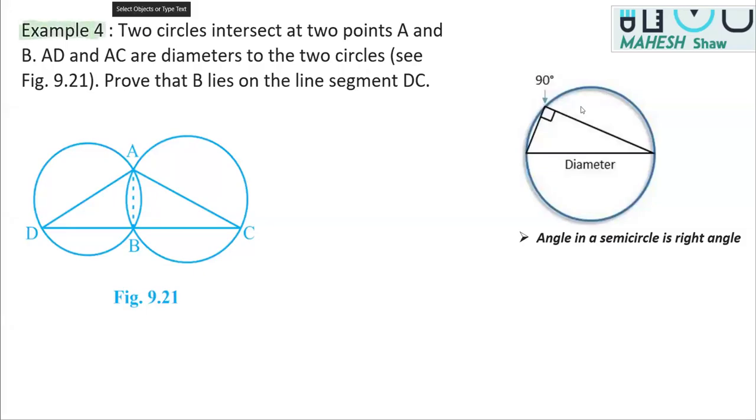This is example number four from the chapter circle. The question says that two circles intersect at two different points A and B. As you know, two circles can intersect at the most two different points, and it is A and B as per the figure.